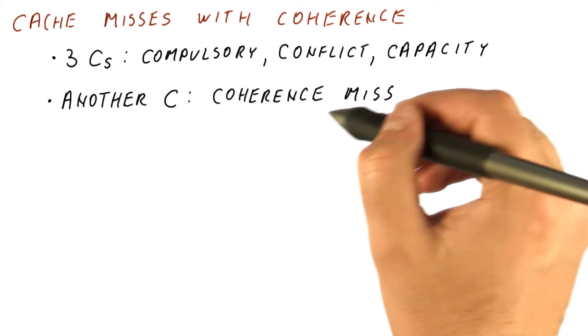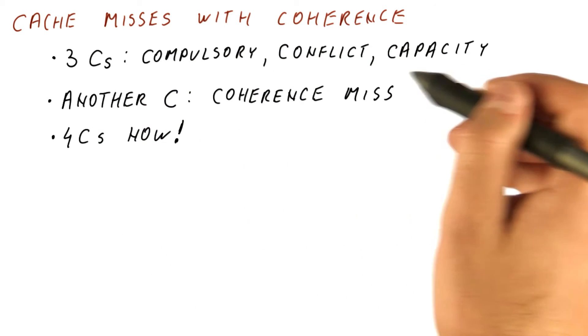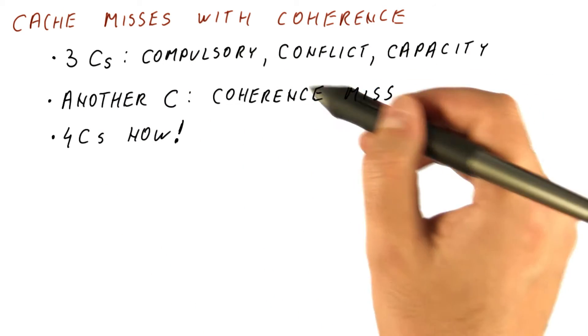So we call this type of miss a coherence miss. Remember that there are actually four C's: the three we have seen before, and coherence miss.